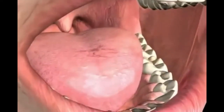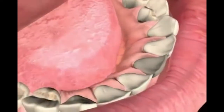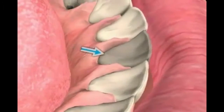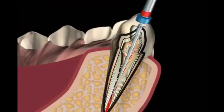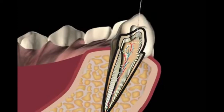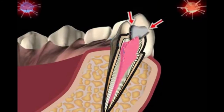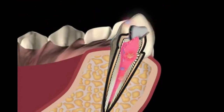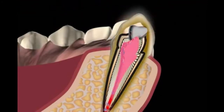Internal bleaching refers to a discolored tooth that is bleached from the inside. Due to a root canal treatment, a tooth may become severely discolored. Bacteria, blood, and saliva components enter the tooth canal during the root canal treatment. Bacteria decomposition products will then lead to a dark discoloration of the tooth.